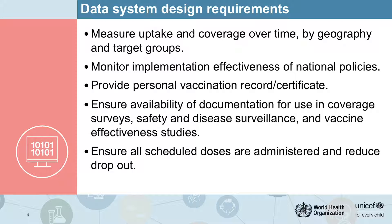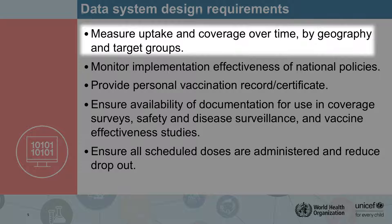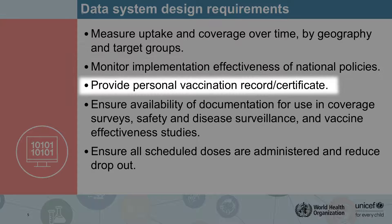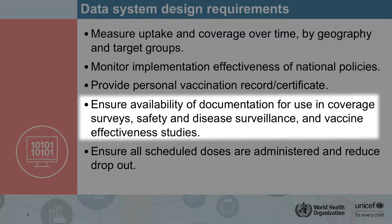To meet those needs you will need to design and implement a system that is able to measure vaccination uptake and coverage over time by geography and across target groups. In the case of COVID-19 vaccines, it's very important that the system is also able to measure whether national policies for prioritization are being implemented — for example, are older adults getting their vaccines ahead of other people? The system will need to provide a personal vaccination record that individuals can use to show proof of vaccination, but also for public health officials who need it for safety and disease surveillance, for vaccine effectiveness studies or for coverage surveys.